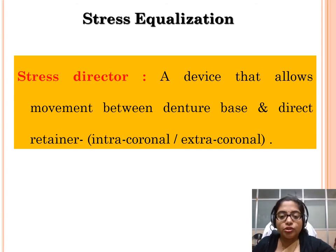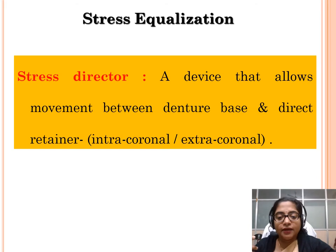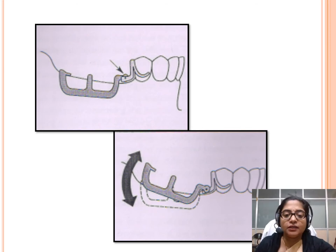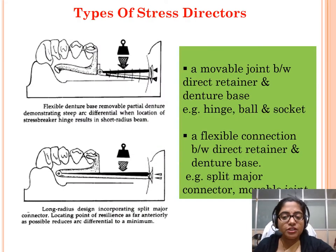The principle of stress equalization aims to distribute stresses equally to the tooth and the ridges. This philosophy advocates the use of a device called a stress breaker, which allows movement between the denture base and the direct retainer. It can be intra-coronal or extra-coronal. As seen in the image, the direct retainer and denture base are connected by a device indicated by an arrow, so that movement is allowed and the tooth is not stressed beyond its physiological capacity.